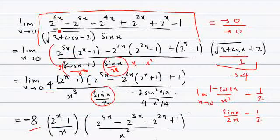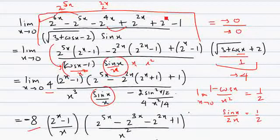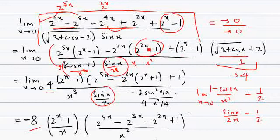Now we need to work out the exponential part. We factorize the numerator: we take 2 to the power 5x common from one part and 2 to the power 2x common from another, aiming to create the factor (2^x - 1). We further factorize using the difference of squares formula a² - b² = (a - b)(a + b), so it becomes (2^x - 1)(2^x + 1). We then take (2^x - 1) common.